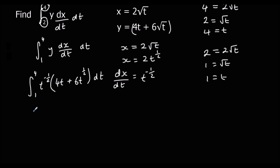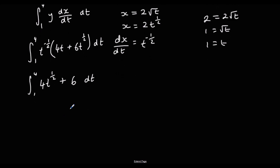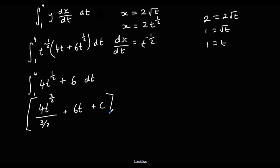So we have t to the power of minus a half times y, which is 4t + 6t to the power of a half, with respect to t. Expanding the bracket — when we multiply we add the powers — t to the minus a half times 4t gives 4t to the power of a half. And t to the minus a half times 6t to the a half gives just 6. So we integrate 4t to the a half + 6 with respect to t: that gives 4t to the 3/2 over 3/2, plus 6t, between 4 and 1.